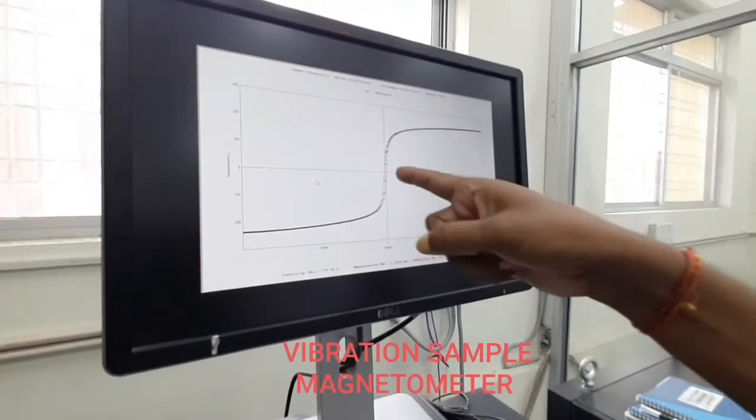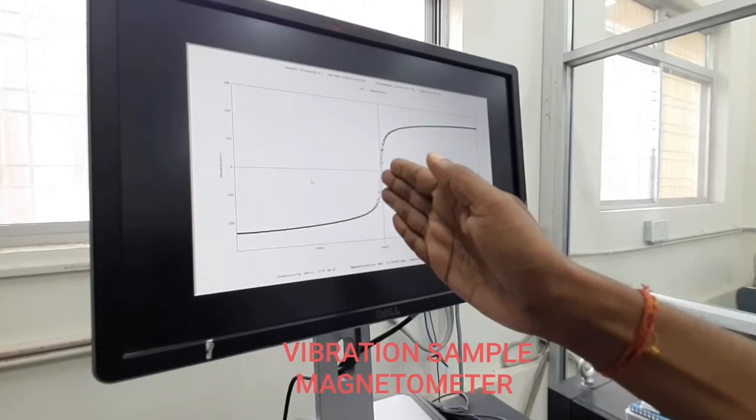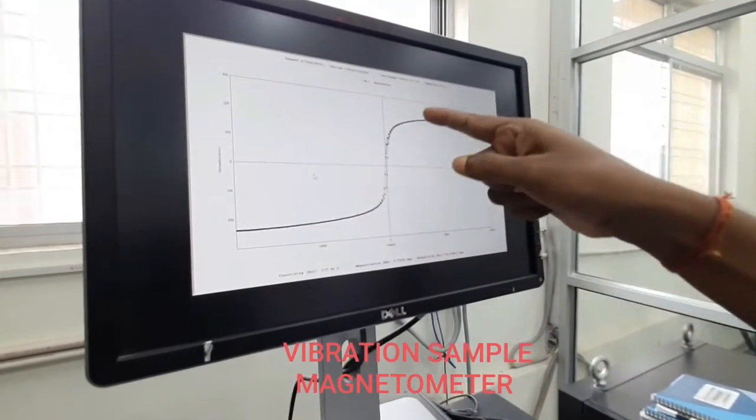And this is the negative value of the magnetic field which is called cursivity of the material, and this is the area of the material.